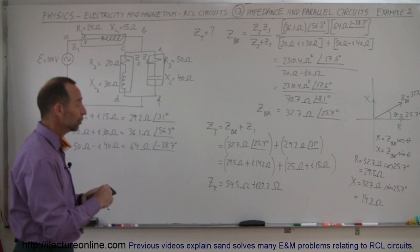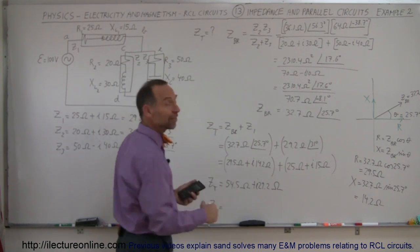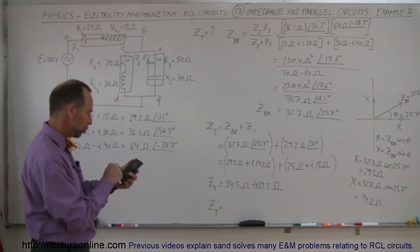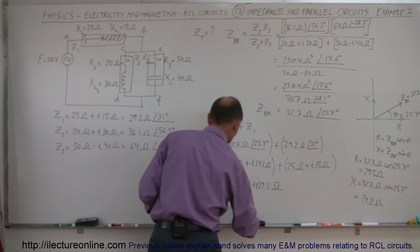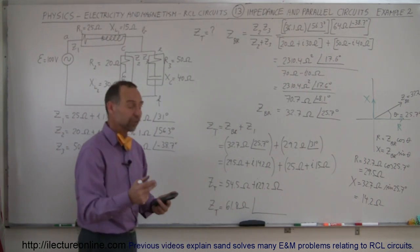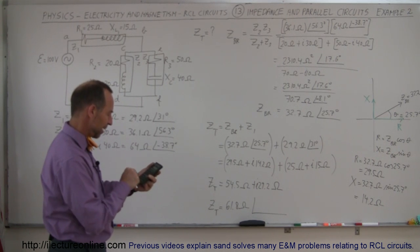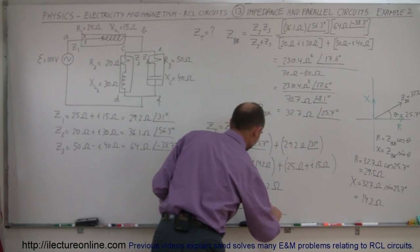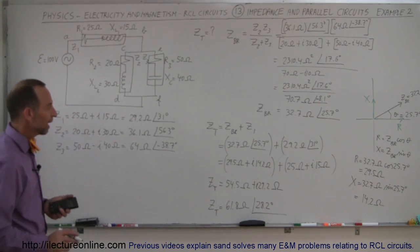If we want to put Z total in magnitude and phase angle format: square root of 54.5 squared plus 29.2 squared gives 61.8 ohms — that's the magnitude of the total impedance. For the phase angle: arc tangent of 29.2 divided by 54.5 gives a phase angle of 28.2 degrees. So that's the total impedance in both complex number format and magnitude-phase angle format.